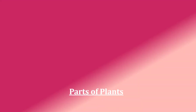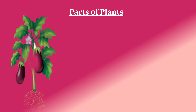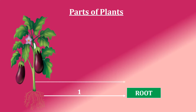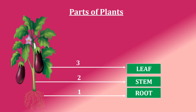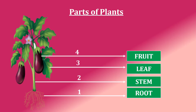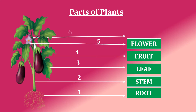Parts of a plant. Here you can see a picture and we'll be discussing the parts of it. The first part is the root, then stem, leaf, fruit, flower, and branch. So a plant has six parts: root, stem, leaf, fruit, flower, and branch.